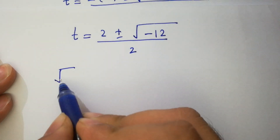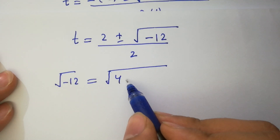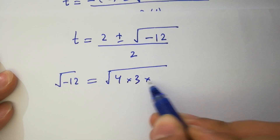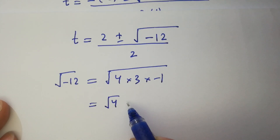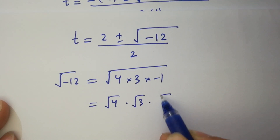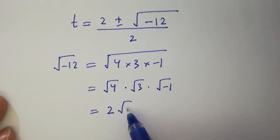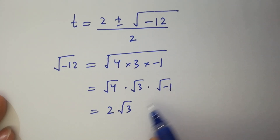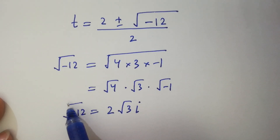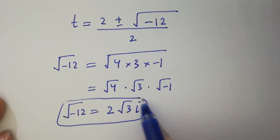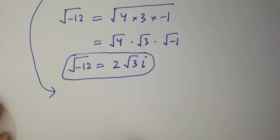Now, square root of minus 12 equals square root of 4 times 3 times minus 1, which can be written as square root of 4 times square root of 3 times square root of minus 1. Square root of 4 is 2, square root of 3 stays as is, and square root of minus 1 is i from complex numbers. So square root of minus 12 equals 2 times square root of 3 times i.